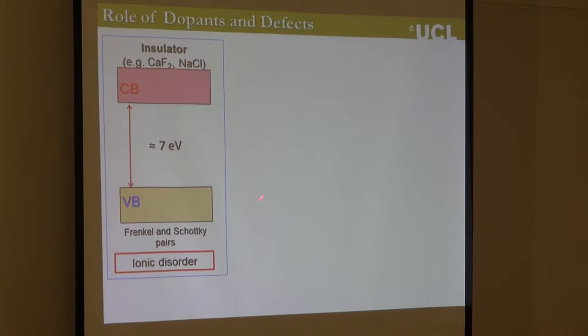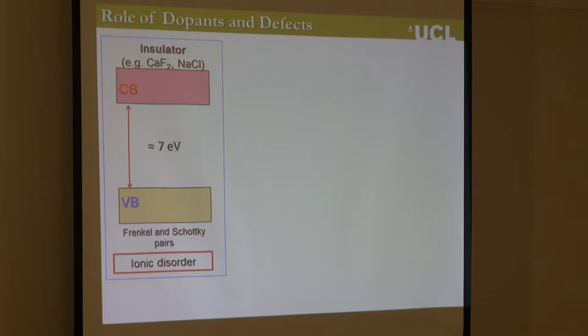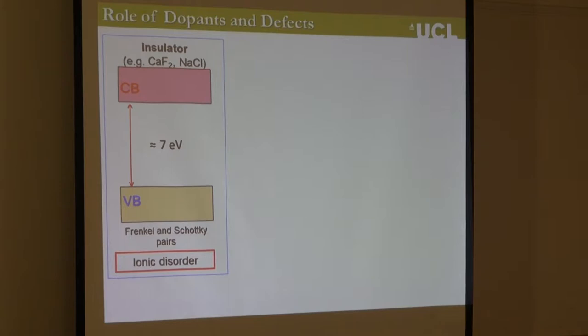Let's look at some basic considerations. If we have a wide-bandgap insulator such as sodium chloride or calcium chloride and we dope it — the kind of experiment Patrick would have done — we know what happens: the compensation for the doping is provided by point defects. So if we dope sodium chloride with magnesium, we get a cationic vacancy. Doping in these materials produces point defects as compensators.